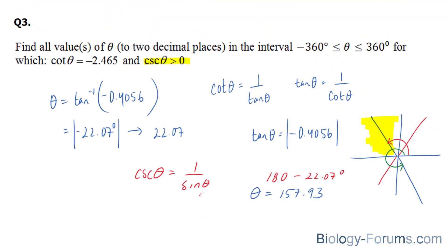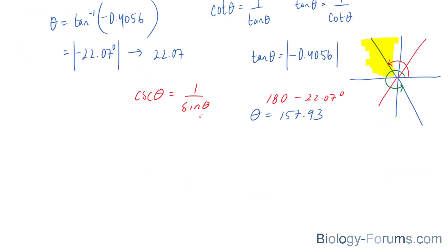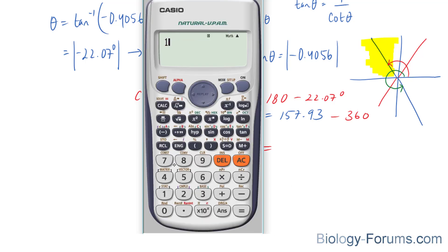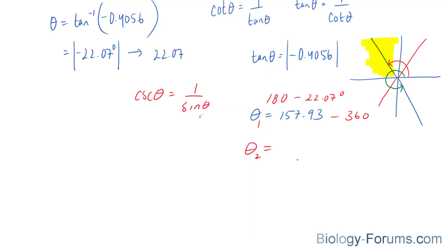And also, it goes between negative 360 and 360. So the next time it will occur is if we subtracted this from 360, and we would have gotten our second angle at 157.93 minus 360, which is negative 202.07 degrees.